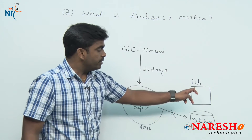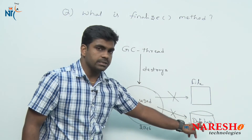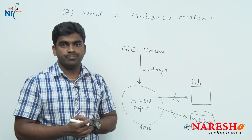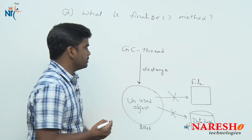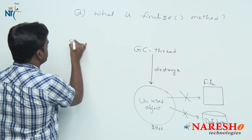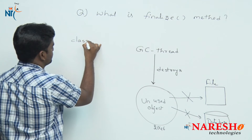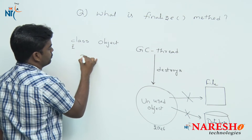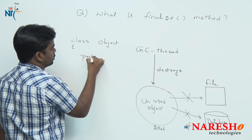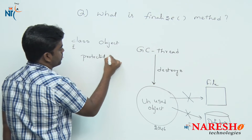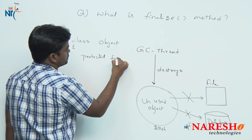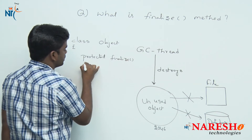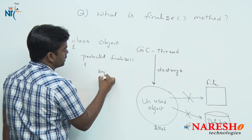Where do we write that resource-releasing code? Inside the finalize method. The finalize method is available in the Object class. It is a protected method — protected void finalize() — with an empty body.